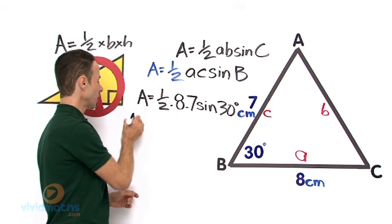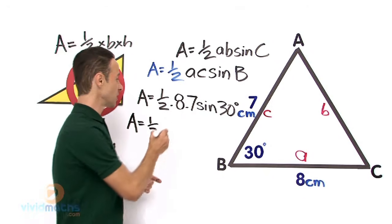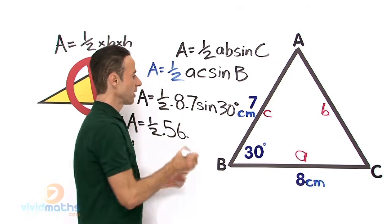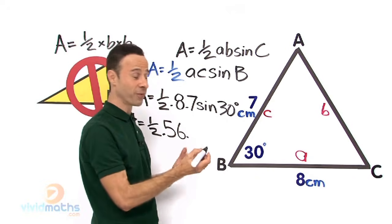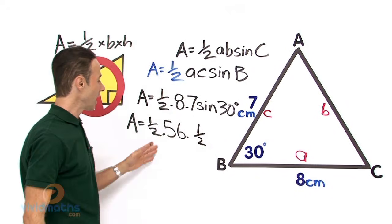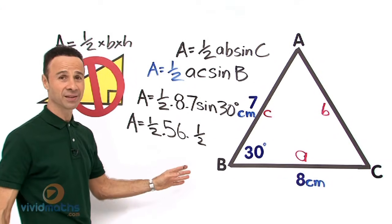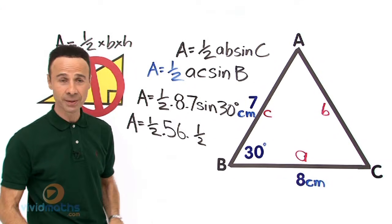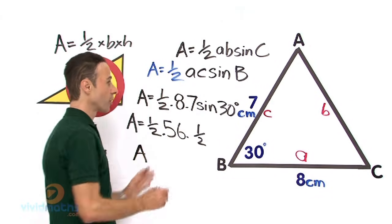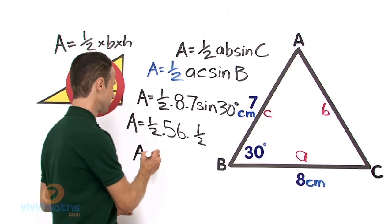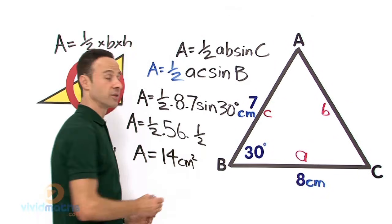So let us finish this off. Area equals one half times 8 times 7, which is 56, and then sine 30 on the calculator is one half or 0.5. So a half times 56 times a half — a half of 56 is 28, half of 28 is 14. So the total area of the whole triangle ABC is 14 square centimeters.